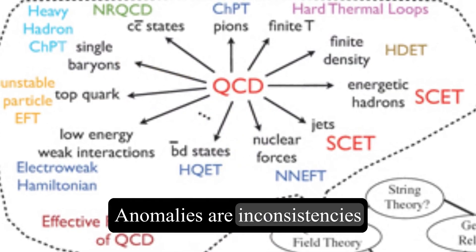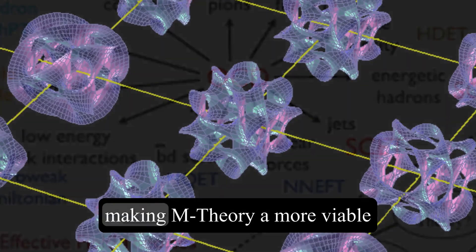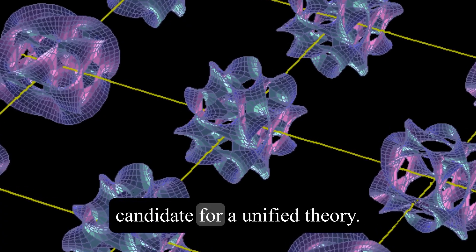Anomalies are inconsistencies that can arise in quantum field theories, and SUSI helps to cancel these anomalies, making M-theory a more viable candidate for a unified theory.